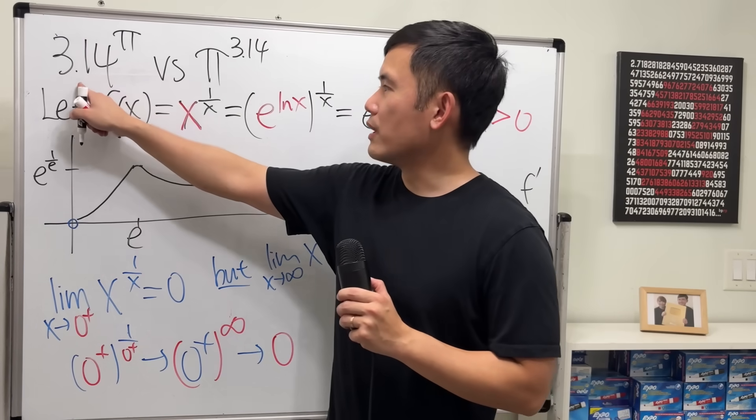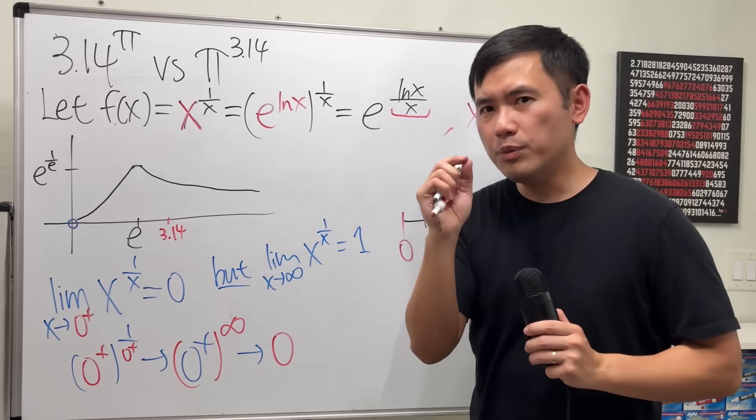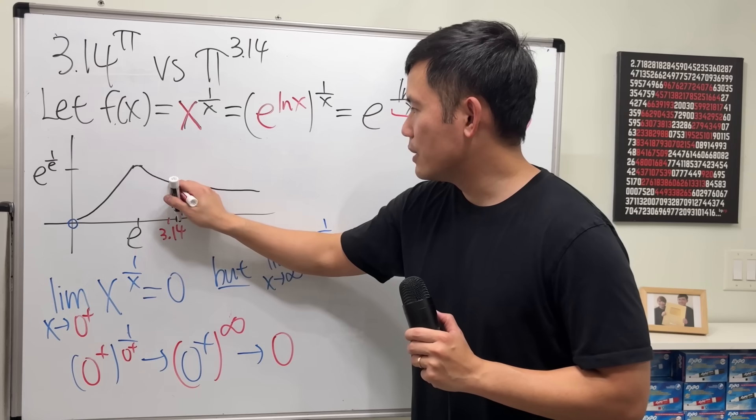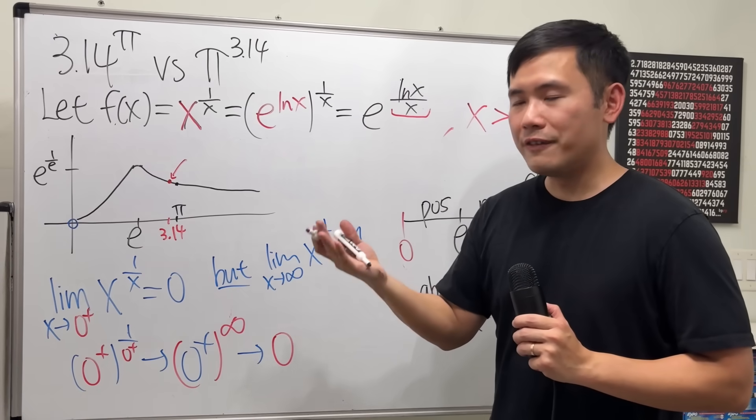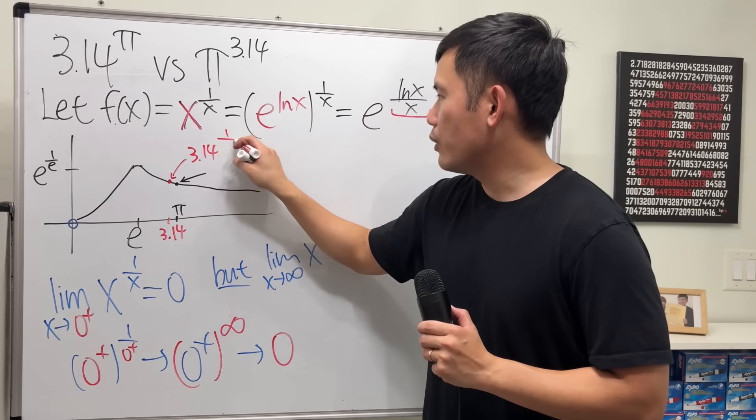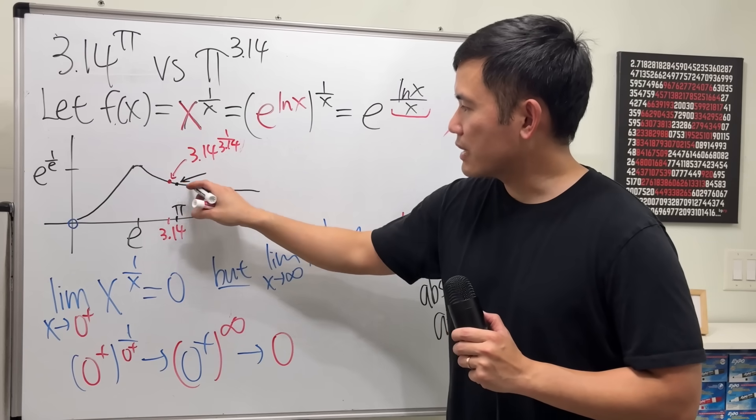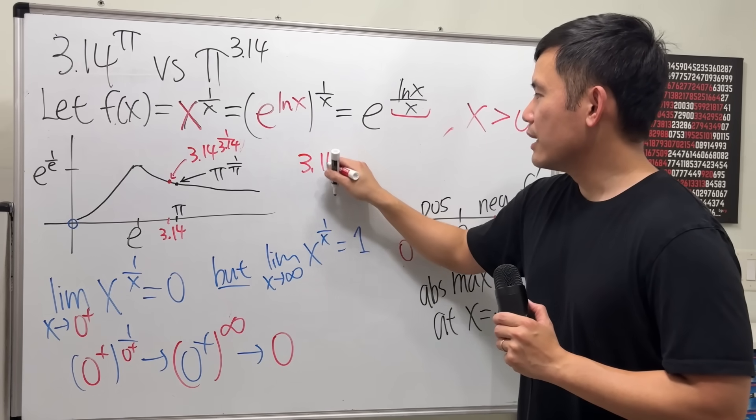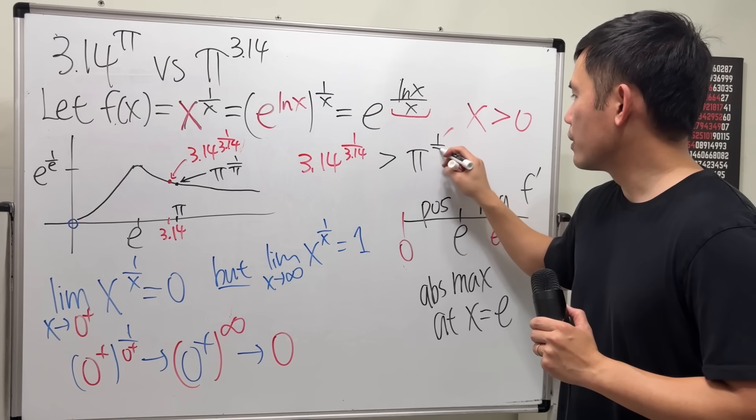Now, 3.14 is closer to e, which does say right here, this is 3.14. π is actually just a little bit bigger than 3.14. So, here is the π. So, right here you can see that if you put this up here, and if you plug in π, you can see this red dot has a bigger y value than this dot right here. And the red dot is 3.14 raised to the 1 over 3.14 power. Meanwhile, the black dot is π to the 1 over π power.